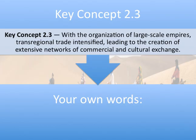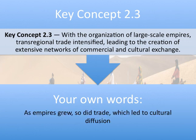We're going to be discussing Key Concept 2.3, which is dictated by the College Board. Hopefully you put that into your own words as something like: As Empires Grew, So Did Trade, Which Led to Cultural Diffusion. The three big ideas in the Classical Period are Empire Building and Falling, Religious Expansion, and Trade. Those are the three big things — if you can get that down, you are going to conquer this. Like Alexander the Great. Hopefully you last longer than he did.